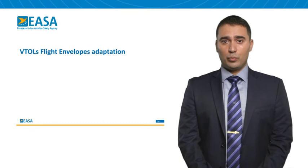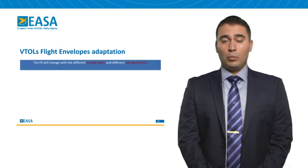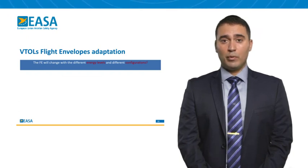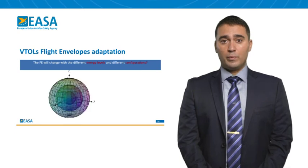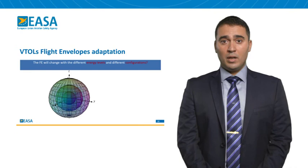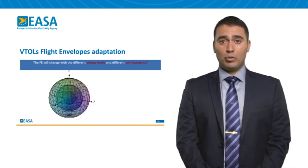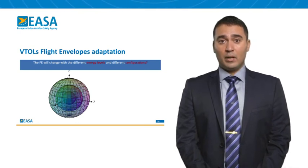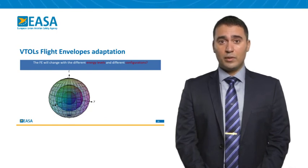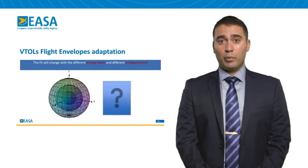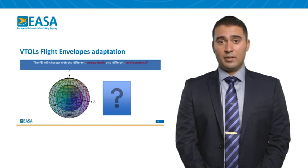Another adaptation we might need to address is what happens to flight envelopes when we change energy levels, state of charge, and configuration. While the earlier graphs were only two-dimensional, VTOLs would have many more configurations, requiring additional axes. Moreover, if different configurations give different flight envelopes, those envelopes may also change with different states of charge. We would probably need to rethink the way flight envelopes are displayed both during the certification activity and during execution of the flight.